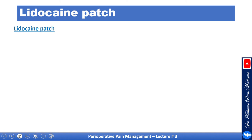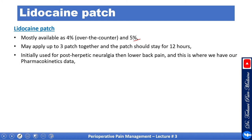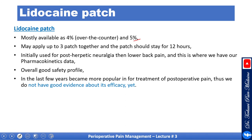Let's cover the lidocaine patch. Mostly available at 4% over the counter, but can come at 5%. Up to three patches may be applied together, and the patch should stay on for 12 hours. Initially used for post-herpetic neuralgia and lower back pain — which is where most pharmacokinetic data comes from. Overall, it has a good safety profile. In recent years it has become more popular for postoperative pain, though we do not yet have good evidence about its efficacy.